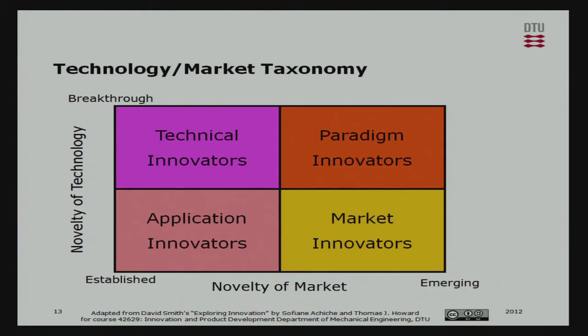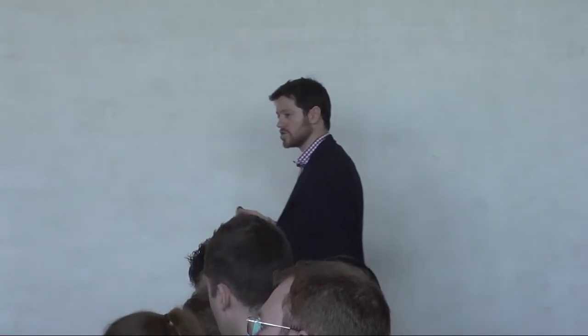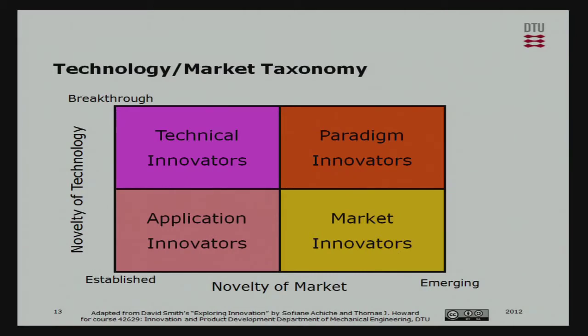Here's a diagram showing novelty of technology on the y-axis and novelty of markets on the x-axis, ranging from established to emerging for markets and established to breakthrough for technology. For established technology and established markets we have application innovators — making incremental improvements for a new application. Market innovators have changed the market completely, even producing a new market. Technical innovators have produced a breakthrough in technology but for the same markets, like the zip fastener.